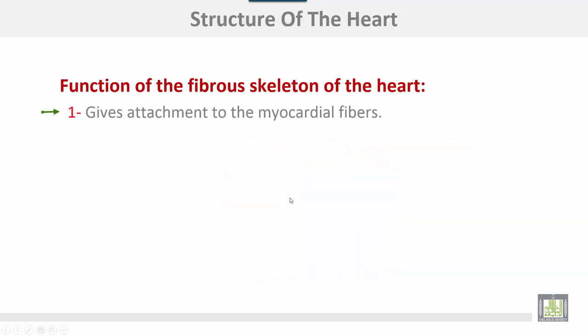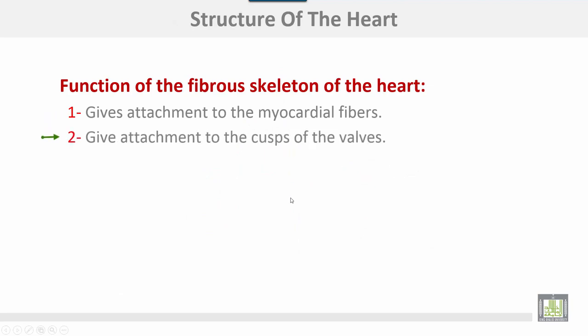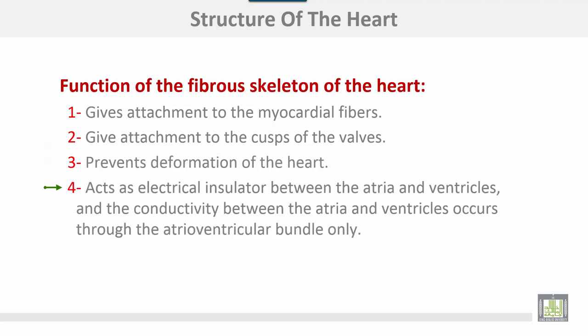The functions of the fibrous skeleton of the heart: number one, it gives attachment to the myocardial fibers; number two, it gives attachment to the cusps of the valves; number three, it prevents deformation of the heart; number four, it acts as an electrical insulator between atria and ventricles, and conductivity between atria and ventricles occurs through the atrioventricular bundle only.